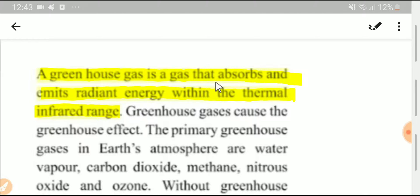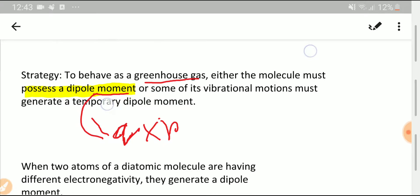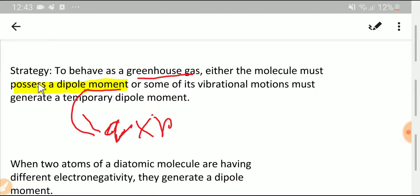Here is the strategy to behave as a greenhouse gas. Either the molecule must possess a dipole moment. To have dipole moment, the molecule must be polar. Ozone is a polar molecule.